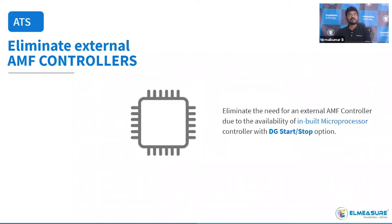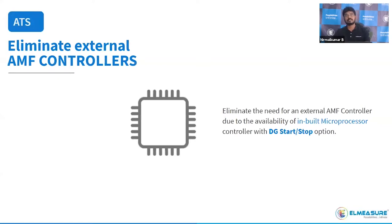The benefit of using L-Meshire ATS is the in-built microprocessor-based controller — the customer has no need for any external controller. Competitors like ABB, Socomat, and L&T provide only the mechanical parts, called remotely operated ATS, and require a separate ATS controller. In L-Meshire, there is no need for any external AMF controller or external accessories, whereas panel builders normally need an ATS controller, line voltage monitoring relay, and external on-delay timers.